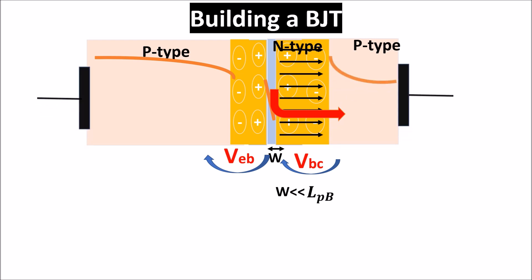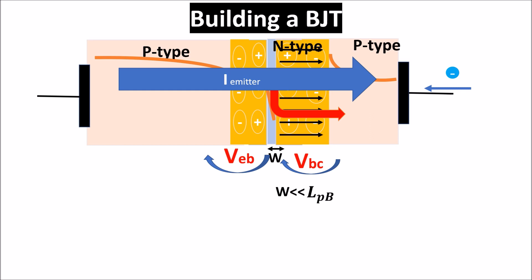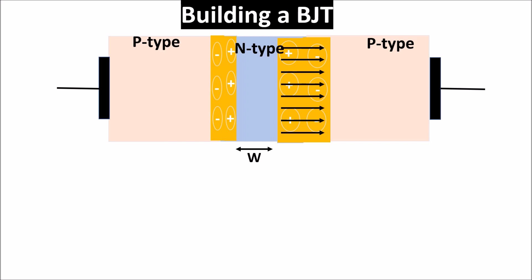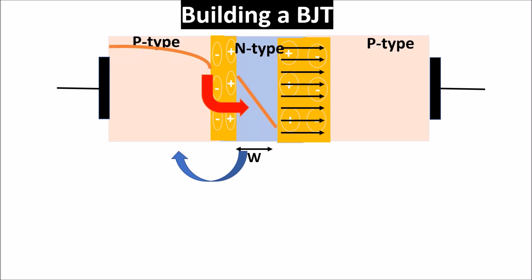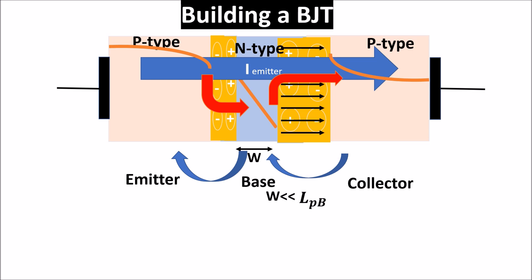Being P-type and long, holes recombine with electrons, but for neutrality reasons these electrons have to be replaced from the metal contact. So a current flows through the device — and this current originates from the first P-type region. We have built a device with P-N-P silicon, creating two PN junctions: one forward-biased, which takes holes from the first P-type to the N-type in the middle, and one reverse-biased. The narrow N-type region is called the base, and the last P-type layer that collects the holes is called the collector. The first P-type region is called the emitter because it emits the carriers.